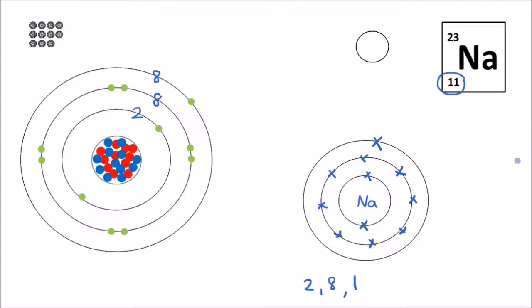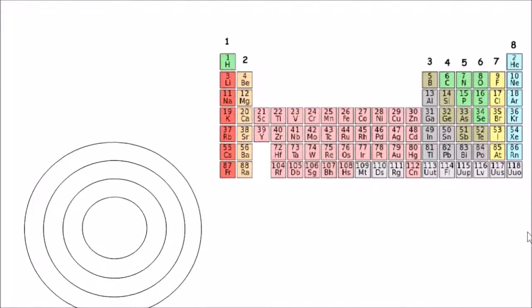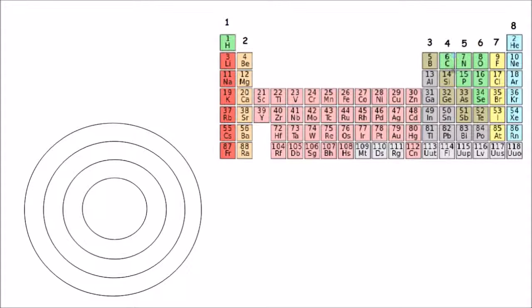Let's do this again for another element — let's do it for carbon. We find carbon here on the periodic table, and carbon has six electrons; the proton number is six, which means it has six electrons. I've drawn out some empty electron shells. We write the symbol for carbon in the center — that's a capital C — and now we start drawing in the electrons. It has six in total. The first shell can only hold a maximum of two, so we move on to the second shell and make up the number to six: three, four, five, six. The second shell holds four, making six electrons for carbon. We can represent it as two, four in numbers.